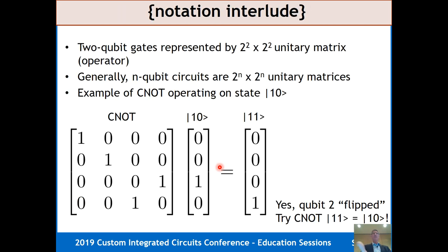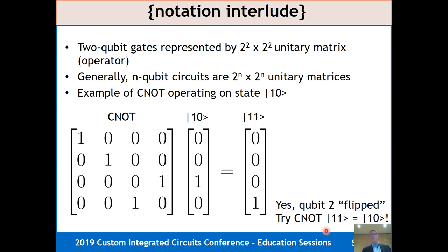A two-qubit gate is represented by a 4×4 matrix. A CNOT applied to the state |1,0⟩ — which in vector form is (0,0,1,0) — when you multiply it out, it flips that last bit. You can try it yourself on |1,1⟩ and you'll see it flips back to |1,0⟩. That's just notation — I'm trying to take some of the mystery away. A lot of quantum computing papers are really just different notation.